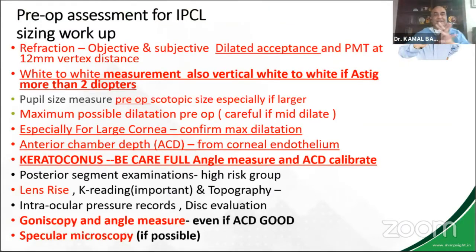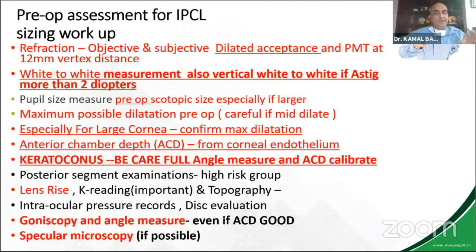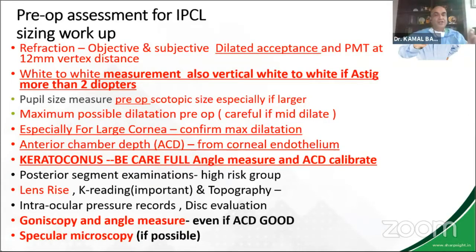Pre-operatively — this is a very information-dense but important slide. A very important point: we need to do a dilated examination of all our patients. White-to-white measurement is important in all these patients, and especially if astigmatism is more than 2 diopters, I personally do a vertical white-to-white as well because it helps me plan the size. Pupil size measurement is very important — I would recommend all beginners to do a pre-operative scotopic pupil size and also see what maximum dilatation is achieved.